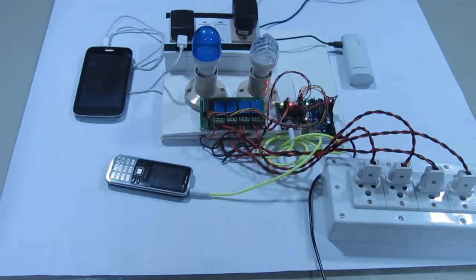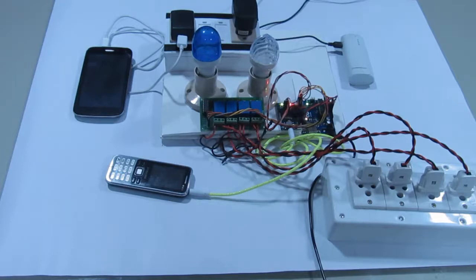DTMF controlled home automation using Arduino. In this, I have connected four appliances: two bulbs, one phone, and another one power bank. So I will show you how we can work these appliances based on our DTMF and also using our mobile phone.